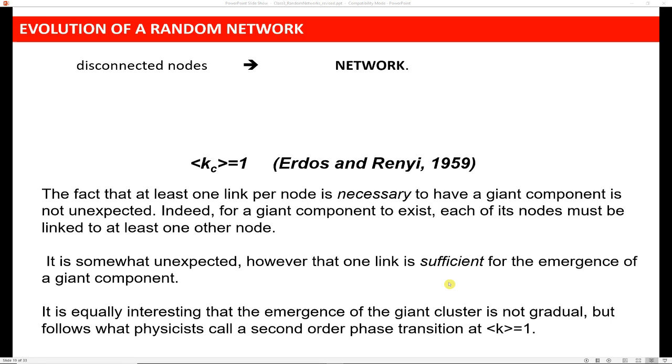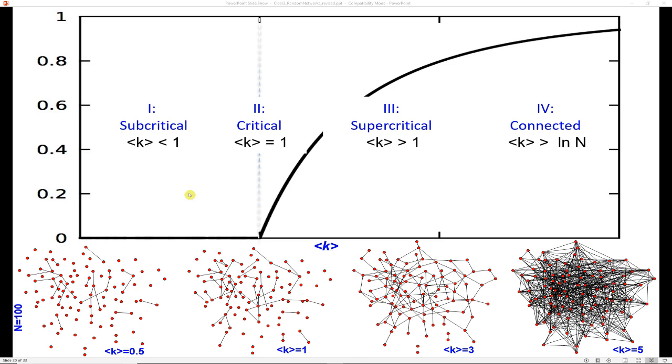And it's also kind of interesting that when this giant cluster happens, it's not gradual. It just suddenly happens and it follows what physicists call a second order phase transition. When, again, this represents the average degree is equal to one.